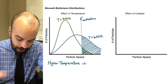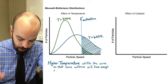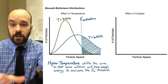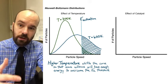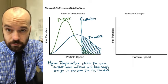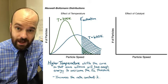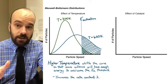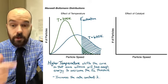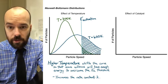To summarize: a higher temperature shifts the curve so that more collisions will have enough energy to overcome the activation energy barrier, and therefore that reaction will happen faster. Another effect is that the increased temperature will increase the rate constant K. Whenever we're talking about a rate constant for a reaction we're really saying the rate constant at a given temperature — if we change the temperature it'll change the rate constant. Higher temperature means a greater rate constant.